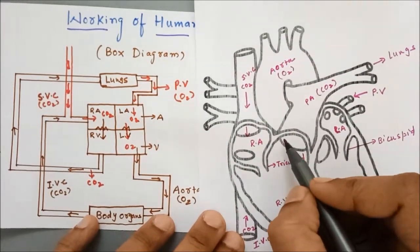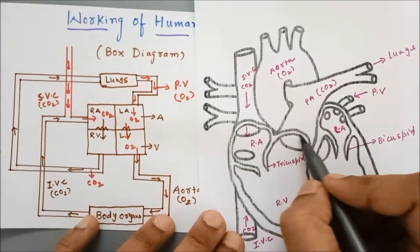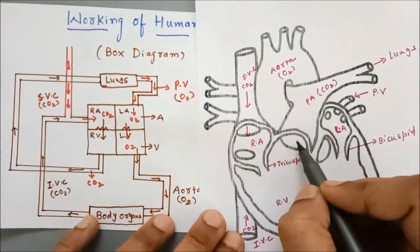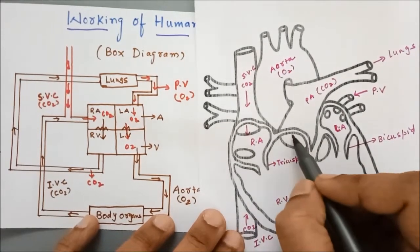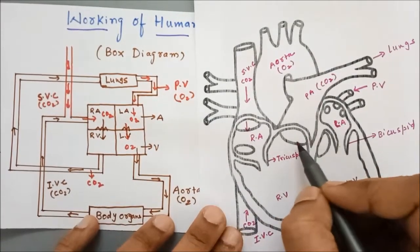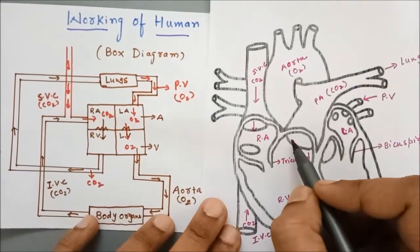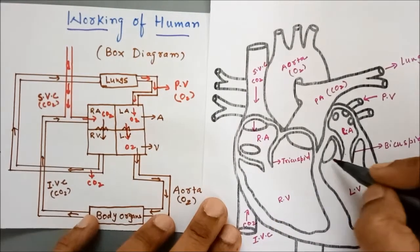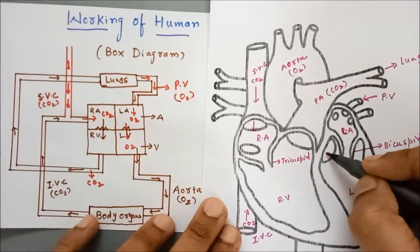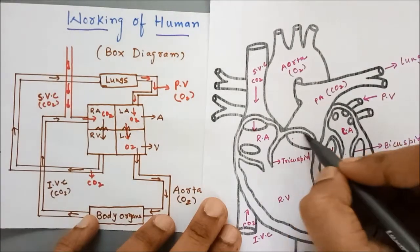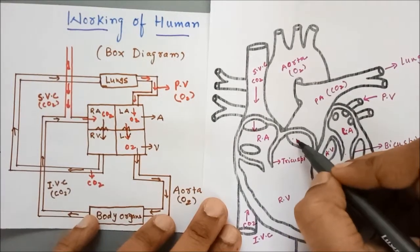Here also, in the aorta and pulmonary artery and all those veins, there are valves. The valve which is present over here is the aortic valve, and here also there is a pulmonary valve.